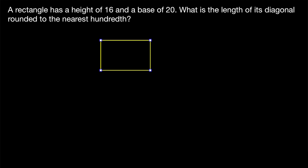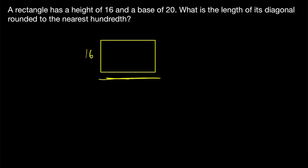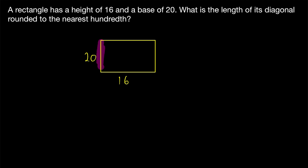Beginning with a picture is always tremendously helpful, so we'll draw a rectangle. The height is 16 and the base is 20. We could flip the way we assign these numbers — this could be the base with length 20 and this the height with length 16 — and we'd still get the same answer. Once you assign a length to a particular side, since this is a rectangle, the opposite side will have the same length.